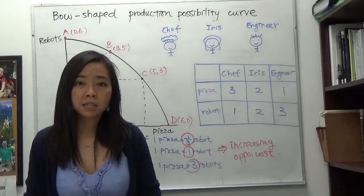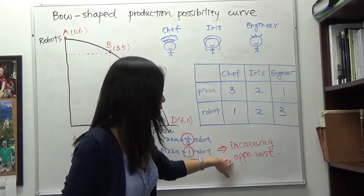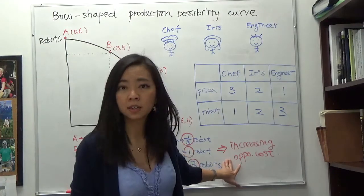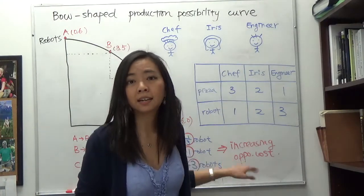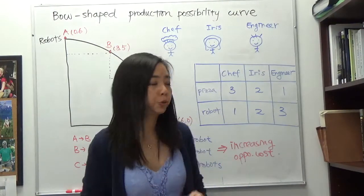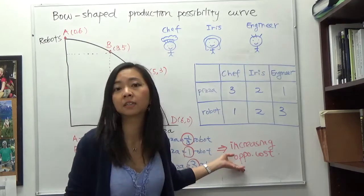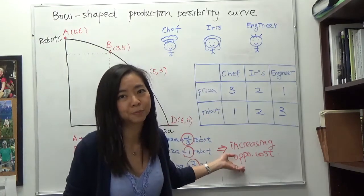The bottom line of the answer is because of increasing opportunity cost, and in this mini video I'm going to show you where this increasing opportunity cost comes from.